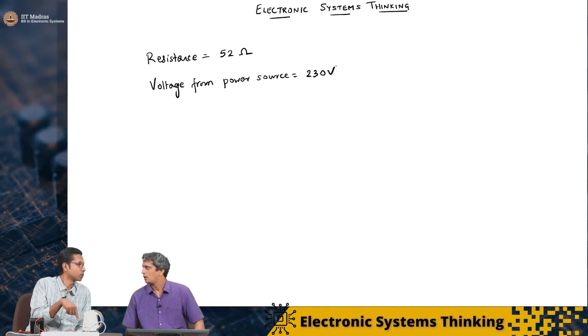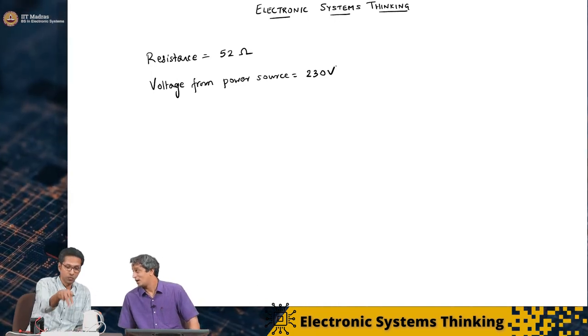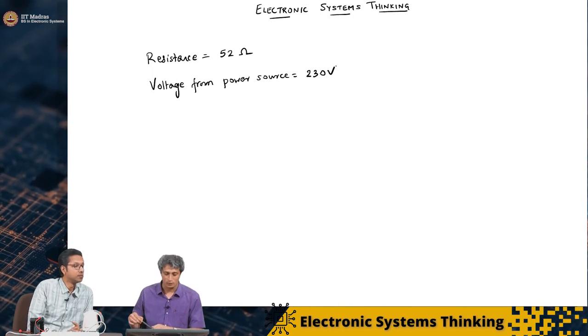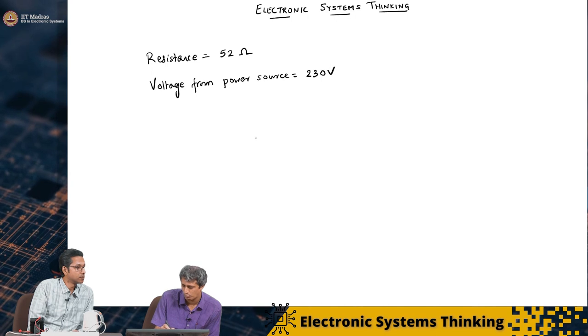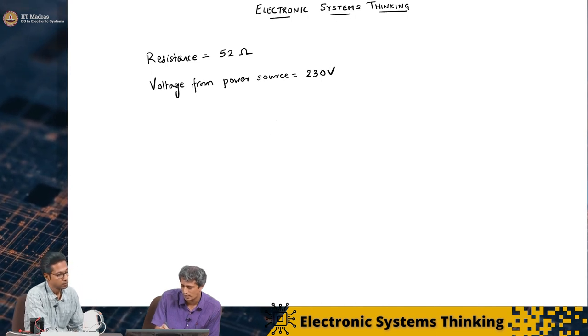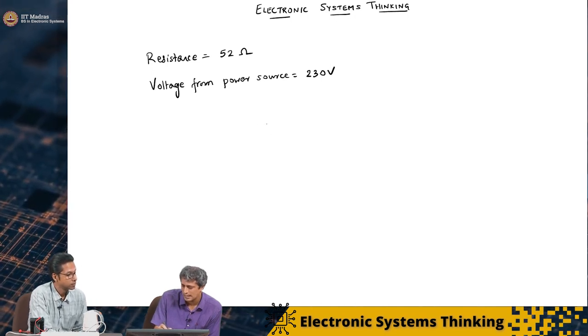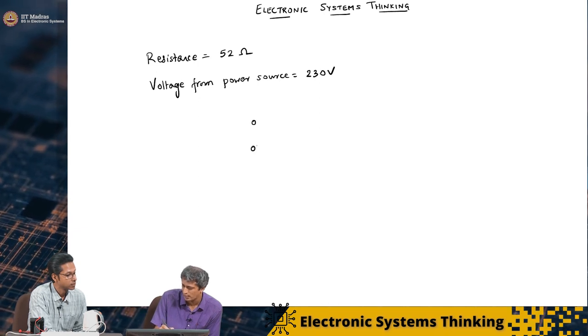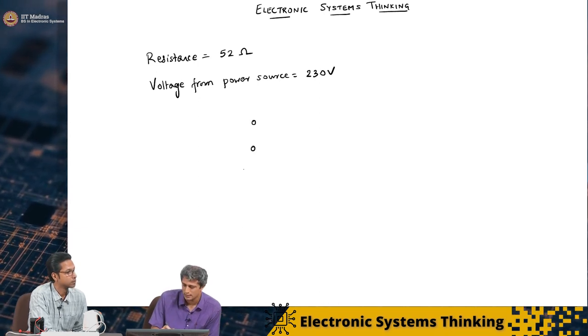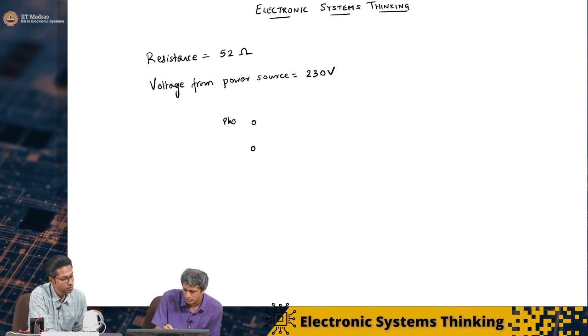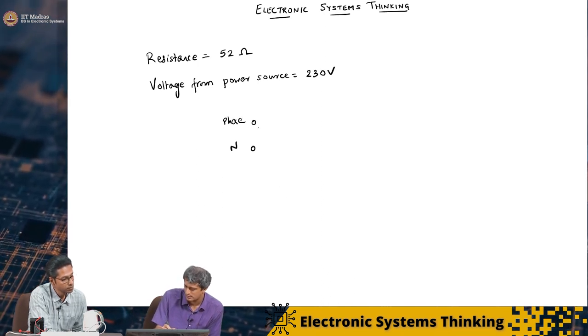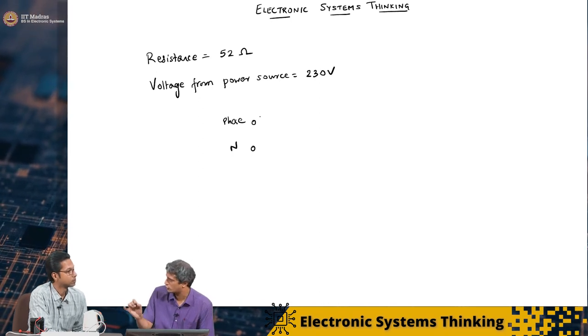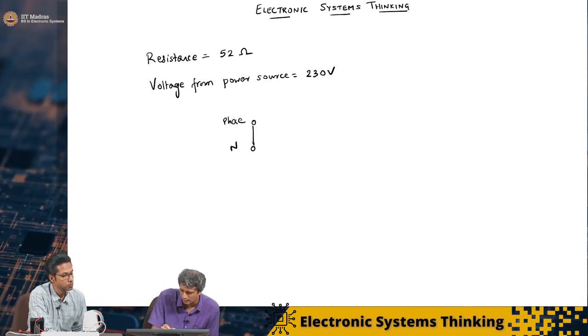That means there will be some current flowing through. Exactly. When I connect this, what you see here is you have this plug. Your kettle is here. And inside, this is your power socket, the phase and neutral. This is phase and neutral and some voltage measurement here showed us 230 volts. We will see what that is later.